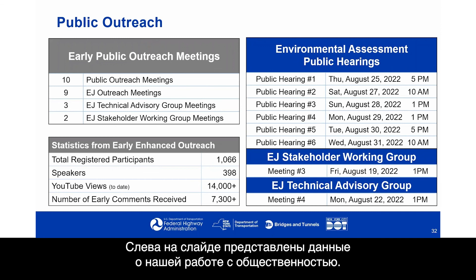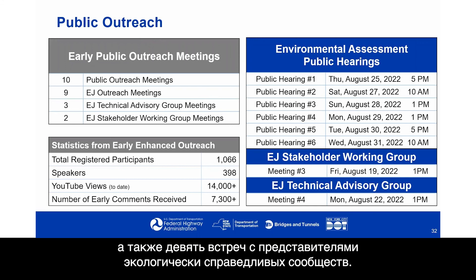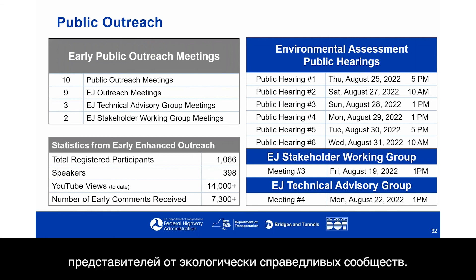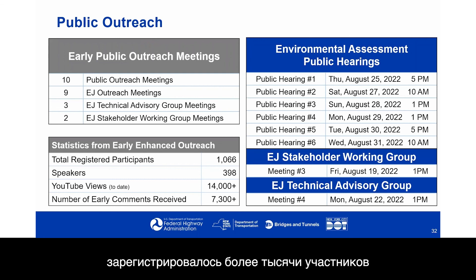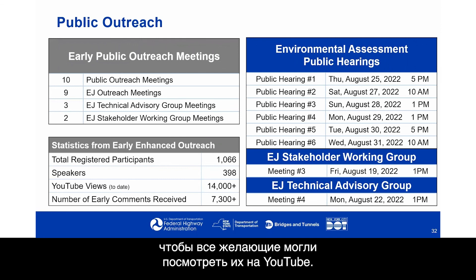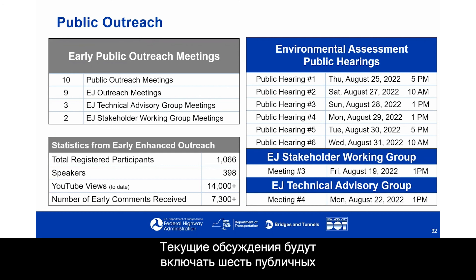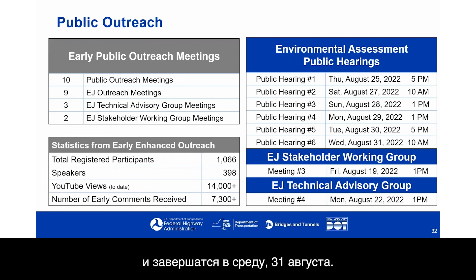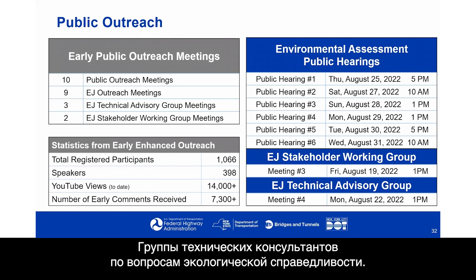Information on early public outreach: during that period, 10 virtual public outreach meetings and nine environmental justice outreach meetings were held, along with three meetings of the Environmental Justice Technical Advisory Group and two meetings of the Environmental Justice Stakeholder Working Group. During the 19 public outreach and EJ outreach meetings, over 1,000 participants registered and nearly 400 speakers participated. Sessions are available on the project website and YouTube, with over 14,000 views and over 7,300 comments received to date. Current public outreach includes six public hearings from August 25th through August 31st, plus additional Environmental Justice Stakeholder Working Group and Technical Advisory Group meetings.